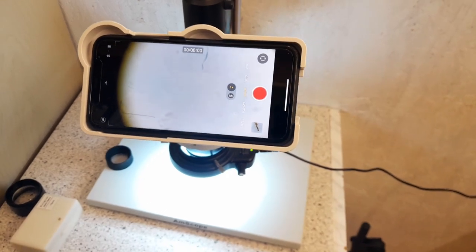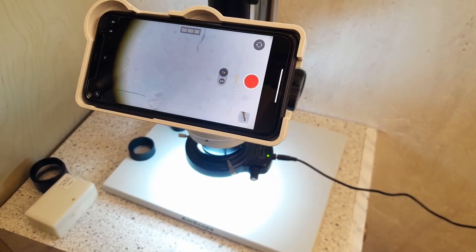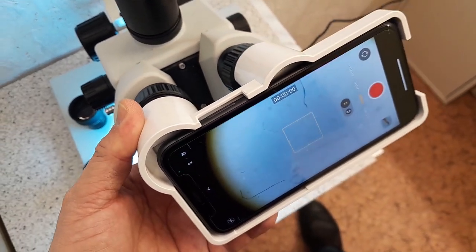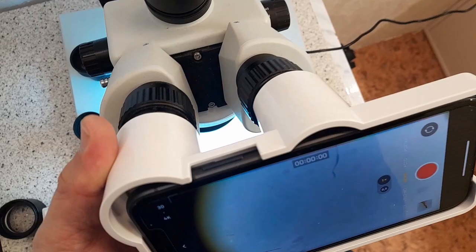I first connected the mobile phone adapter to my stereo microscope to have a first look here and as you can see it rests on the right eyepiece and therefore the mobile phone is kept horizontal.